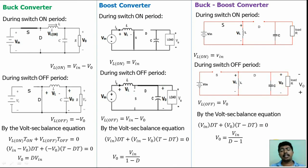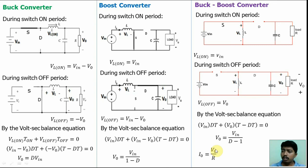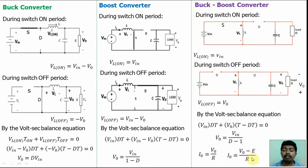Now, average output current. The average output voltage is a DC voltage. If the load is a resistive (R) load, the average output current I₀ = V₀ / R. If the load is an RLE load (resistor, inductor, and back-EMF E), the inductor acts as a short for DC, so there is an E voltage component. Therefore the average output current I₀ = (V₀ − E) / R. This is the average current formula for the RLE load.